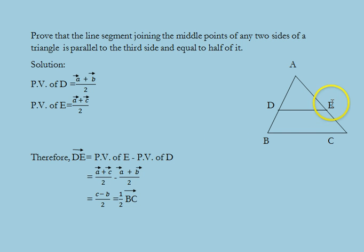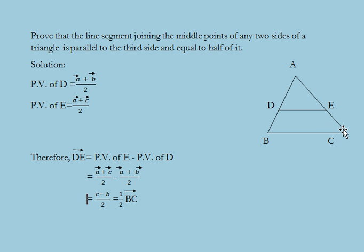Hence DE is parallel to BC and equal to one-half of its magnitude. Thus we have proved the result as specified in the given problem. With this we conclude another lecture based on vectors, which covered the multiplication of vectors by scalars and the representation of a vector in terms of position vectors of its end points.